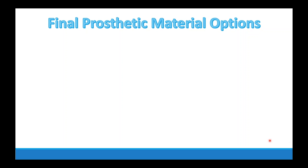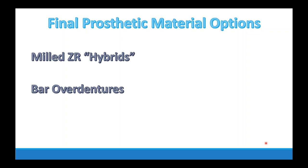For the final prosthetic material options, there are a lot of options today — a lot of focus on milled zirconia hybrids or solid zirconia screw-retained prostheses, referred to by several different names. There are also bar overdentures. One thing you need to understand is that bar overdentures are not a valid alternative to a hybrid on an All-on-Four just because you prefer removables. Typically, a bar overdenture is actually going to take much more space than a hybrid would for the same arch — so it's not simply an option to say 'I'd rather go with something removable, let's do a bar overdenture.'